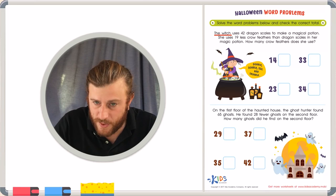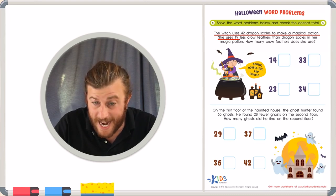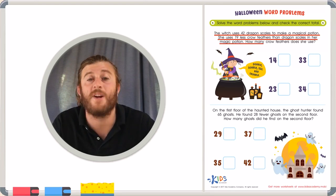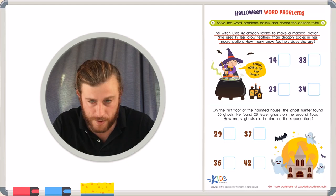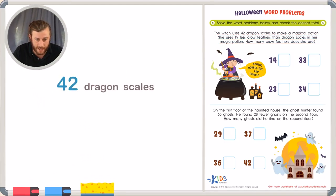The witch uses 42 dragon scales to make a magical potion. She uses 19 less crow feathers than dragon scales in her magic potion. How many crow feathers does she use? How many crow feathers does she use? So I know she uses 42 dragon scales. We're just going to call them scales.